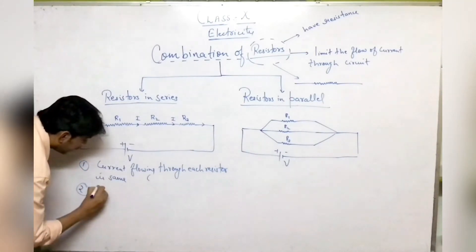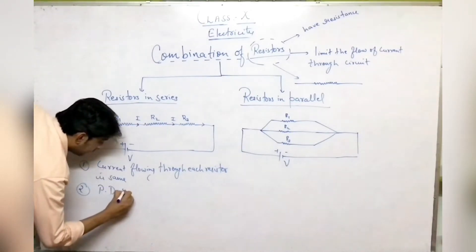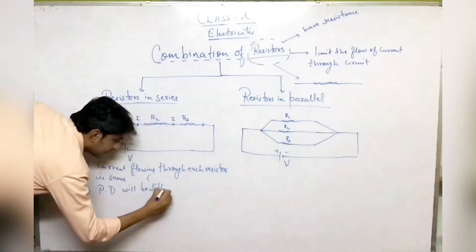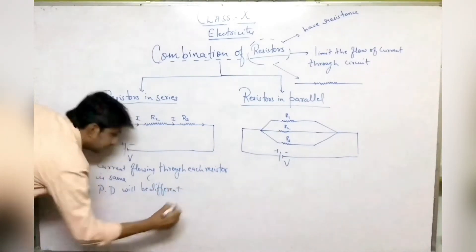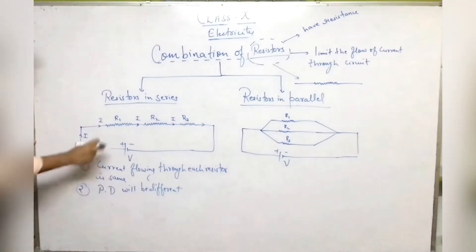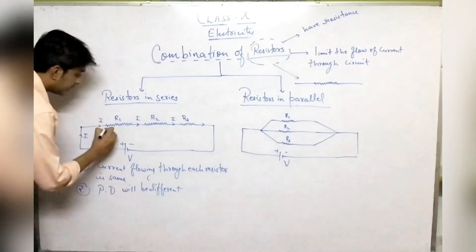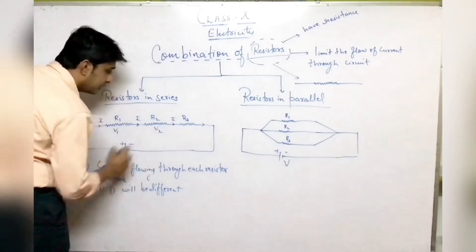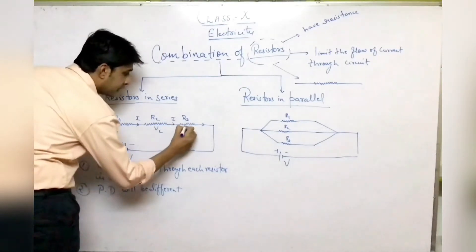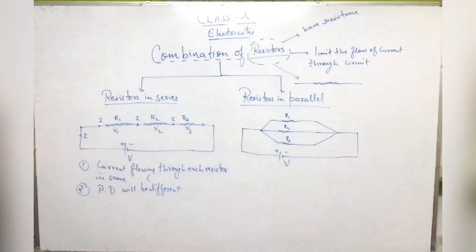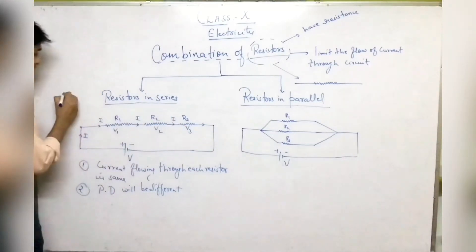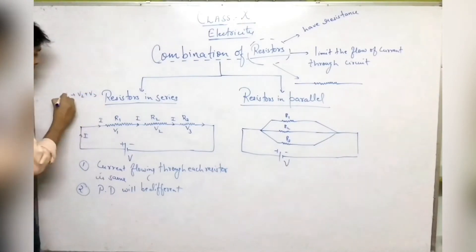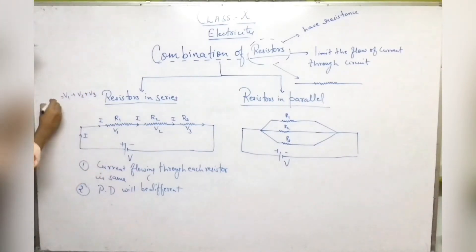Second: in a series combination, the potential difference will be different across each resistor. Across the first resistor it is V1, across the second it is V2, and across the third it is V3. The sum V1 + V2 + V3 will be equal to the total potential difference of the cell. So in series: same current, different potential difference.